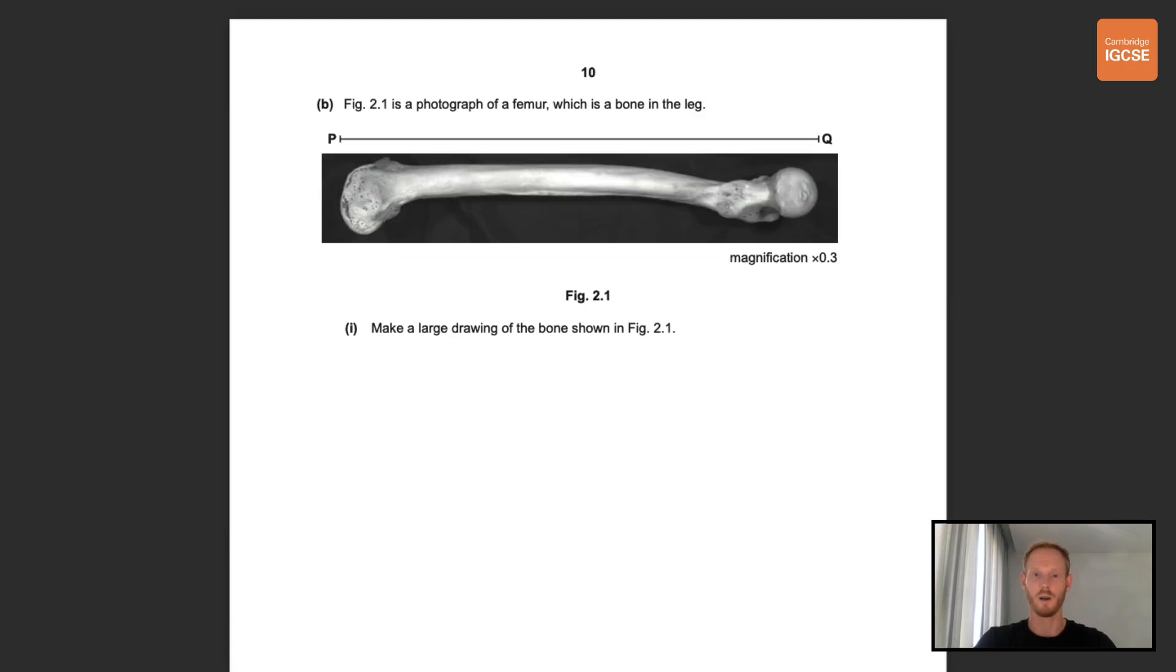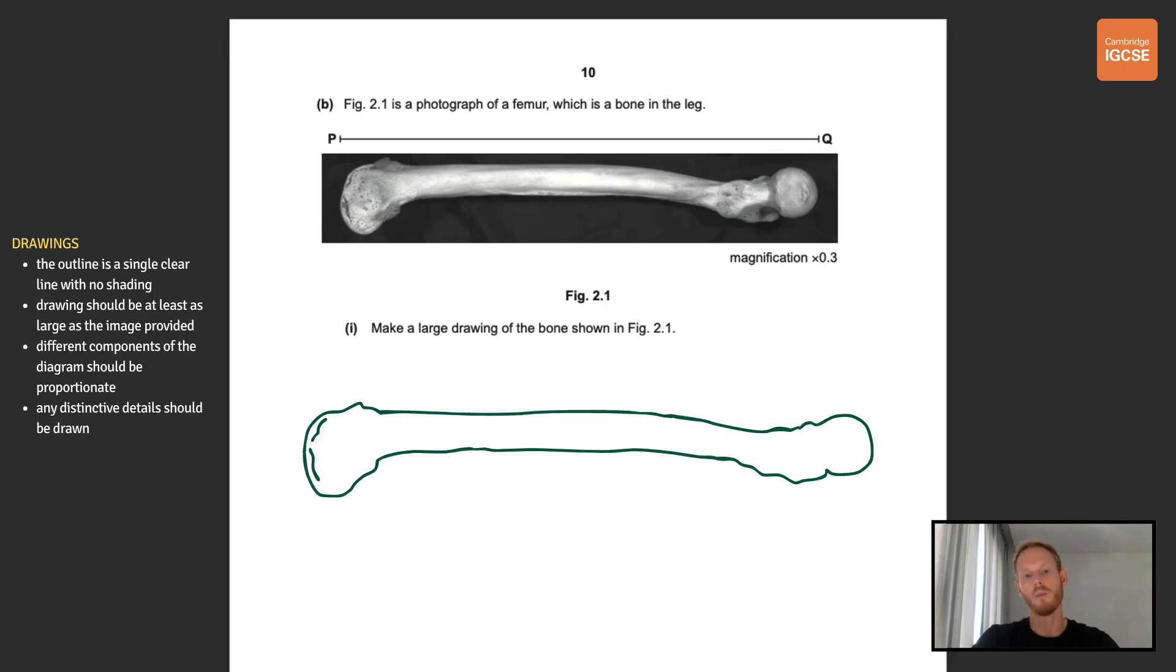Okay now on to our final question which always seems to come up in papers 5 and 6. Figure 2.1 is a photograph of a femur which is a bone in the leg and we've got line PQ there and the magnification of the image. You need to make a large drawing of the bone shown in figure 2.1 and this is worth four marks. In this case you'll get one mark for drawing an outline that is a single clear line with no shading and one mark for drawing a bone that's at least as large as the image provided so always use the majority of the space. The other two marks are for specific details so the most obvious details in the image need to be included. There's one mark here for drawing the projection or pointy bit at the top left of the diagram and one for the dark lines on the far left.